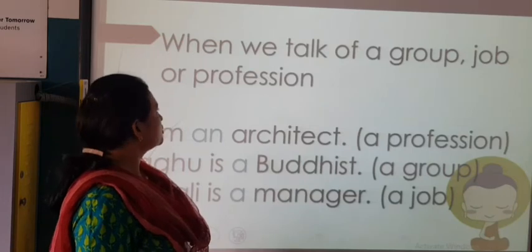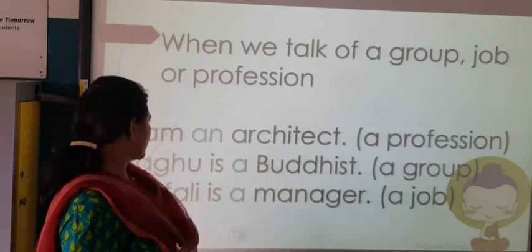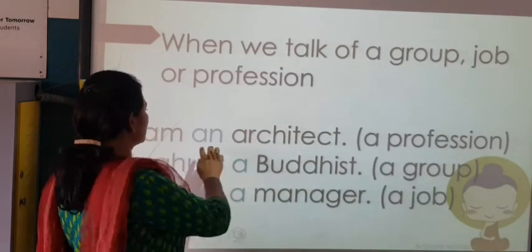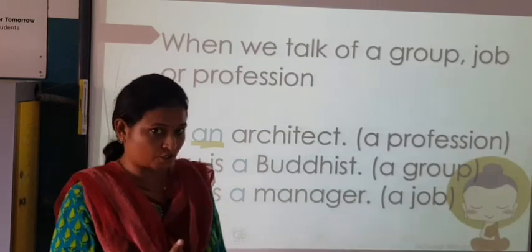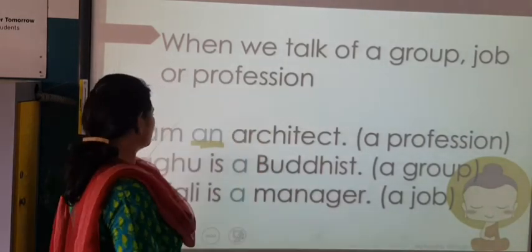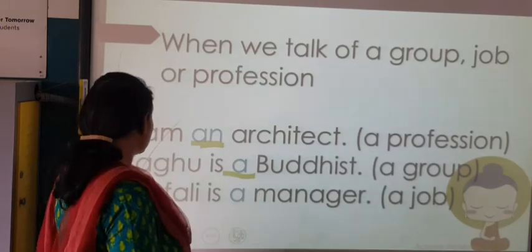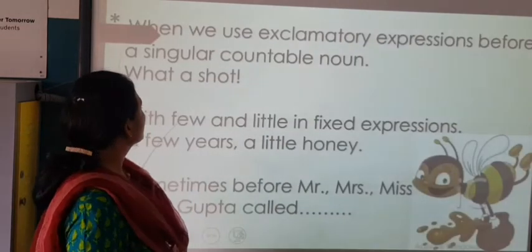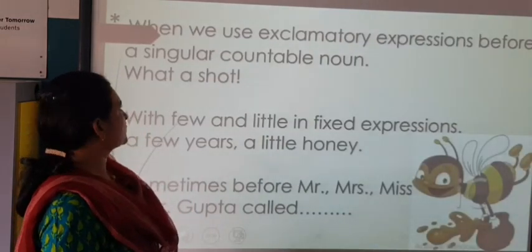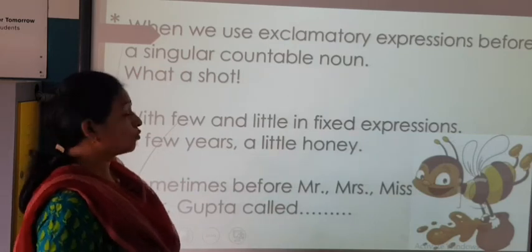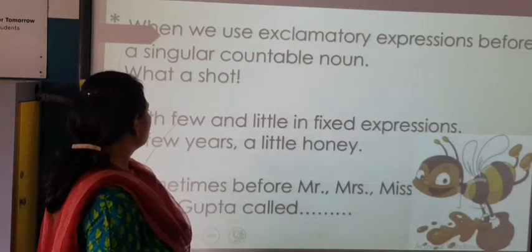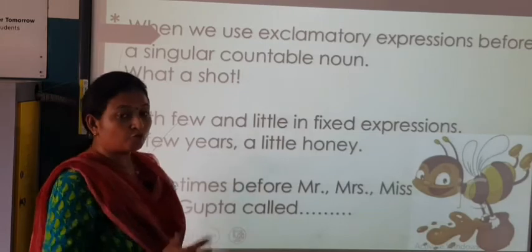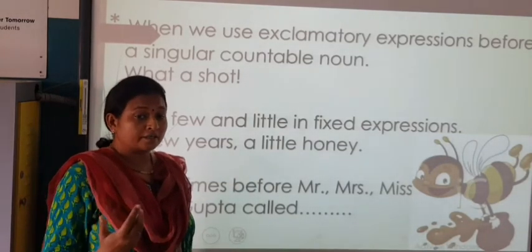When we talk of a group, job, or profession: 'I am an architect' — it is a profession, so at that time you use the article. 'I am a teacher.' 'Raghu is a Buddhist.' 'Shifali is a manager.' When we use exclamatory expressions before a singular countable noun: 'What a...!' With 'few' and 'little' in fixed expressions: 'a few years', 'a little honey' — with few or little, you also use the article 'a'.